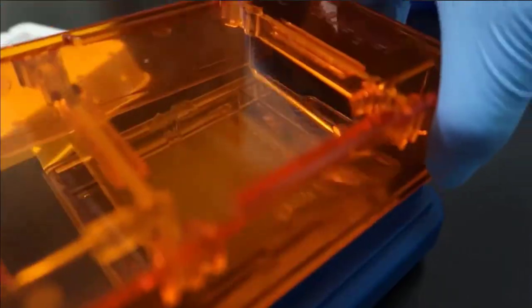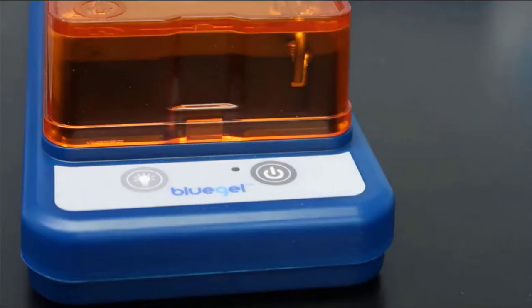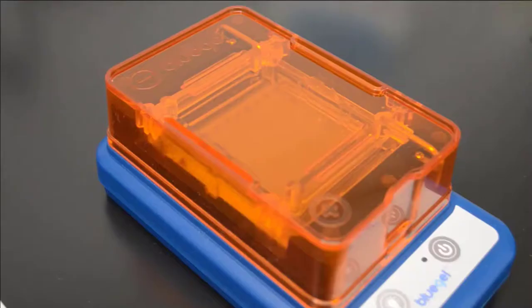Once our samples are loaded, we will close the lid and turn on the power. Here, we're using the blue gel from MiniPCR Bio, which combines an electrophoresis chamber and visualization system. The blue gel will take about 20 minutes to run. Once the gel has run, we need a way to visualize our DNA.